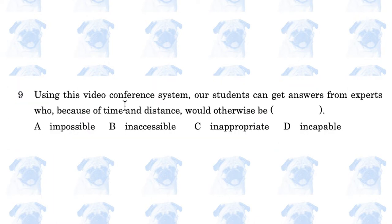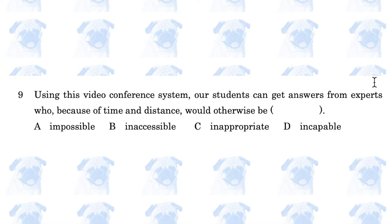Using this video conference system, our students can get answers from experts who, because of time and distance, would otherwise be blank. The answer is B, inaccessible. Inaccessible is the antonym of accessible. Because of the relative pronoun 'who' here, the adjective that goes into the brackets must be a modifier of the noun 'experts.' In this context, these experts are inaccessible because they live far away.